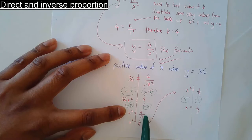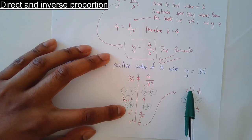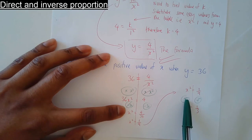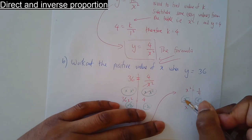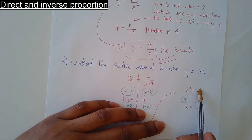The 36s knock each other out, leaving x squared equal to 4 over 36, which simplifies to 1 over 9. So x squared equals 1 over 9. To get rid of the squaring, square root both sides — the square root and the square cancel, leaving just x. Square root of 1 is 1, square root of 9 is 3. So x equals one third.